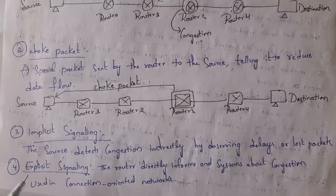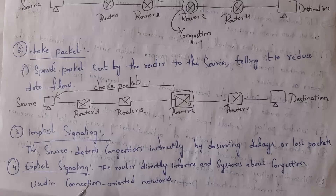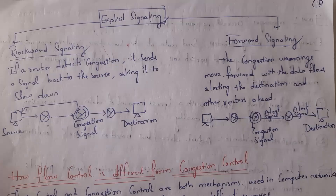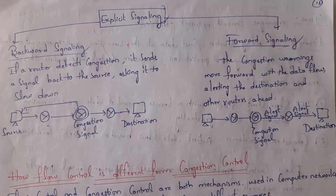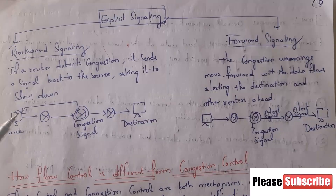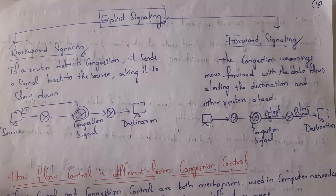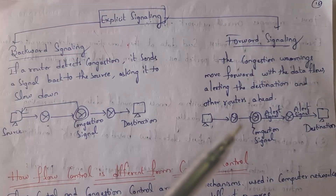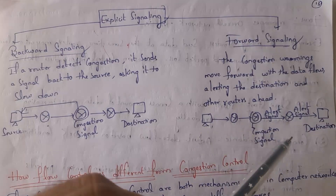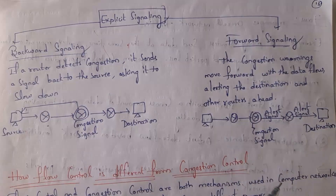The fourth one is explicit signaling. In this technique, routers will directly inform the computer that congestion has occurred. This technique is used in connection-oriented networks. Explicit signaling is classified into two types: backward signaling and forward signaling. In backward signaling, whenever congestion occurs at a particular router, that router informs the source computer to slow down the data transmission. In forward signaling, when congestion occurs at a particular router, that router forwards an alert message to the destination computer informing it that congestion has occurred.